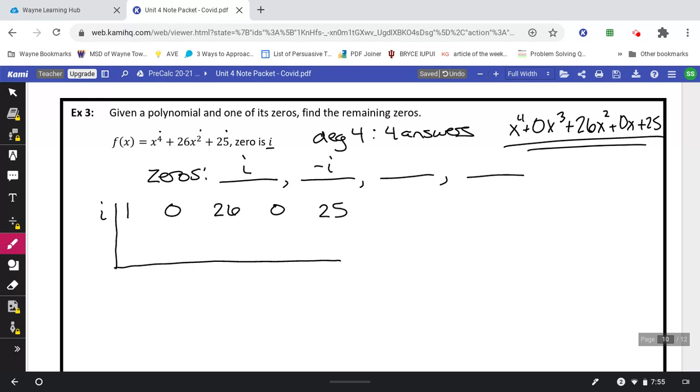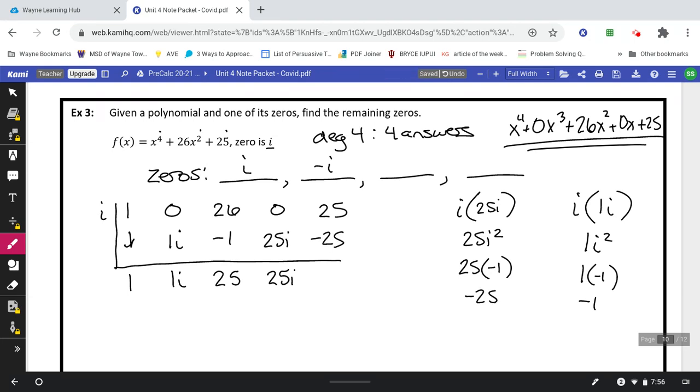Watch for those missing exponents there. Alright. We'll bring down the 1. 1 times i is 1i. But 0 plus 1i just gets me 1i. i times 1i would get me 1i squared. i squared is negative 1, so that would get me an answer of negative 1. I'll write my answer of negative 1 right here. Combine it with a 26 to make 25. i times 25 is 25i. Thankfully, I have another 0 right there, so I just end up with 25i. And then i times 25i will get me 25i squared. 25i squared would be 25 times negative 1, which gets me negative 25. Notice here how these cancel out, and I get an answer of 0, which is always what you're looking for.